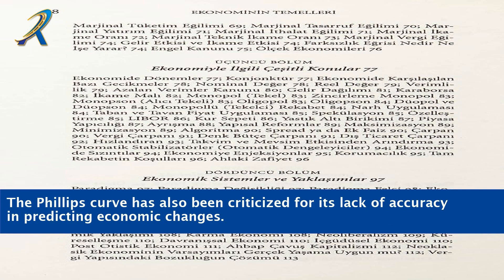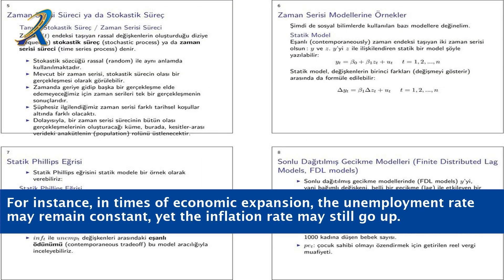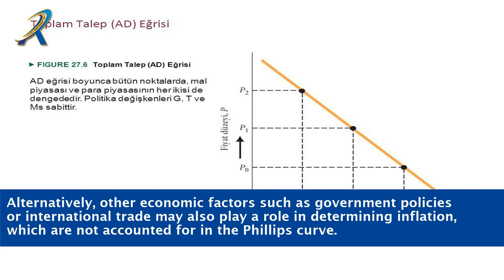The Phillips curve has also been criticized for its lack of accuracy in predicting economic changes. This is because the relationship between inflation and unemployment is not always linear, as the curve suggests. For instance, in times of economic expansion, the unemployment rate may remain constant yet the inflation rate may still go up. Alternatively, other economic factors such as government policies or international trade may also play a role in determining inflation, which are not accounted for in the Phillips curve.